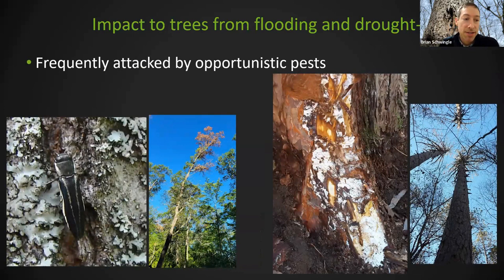With both flooding and drought stress, because you get reduced defensive compounds, opportunistic pests that aren't really aggressive when trees are healthy can cause big problems when trees are severely stressed. I'll dive into this in a bit.